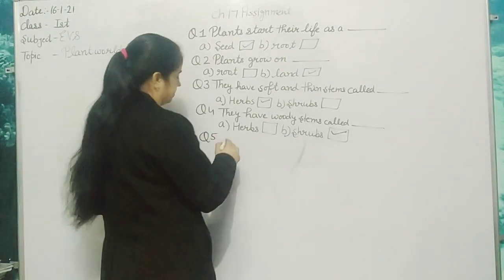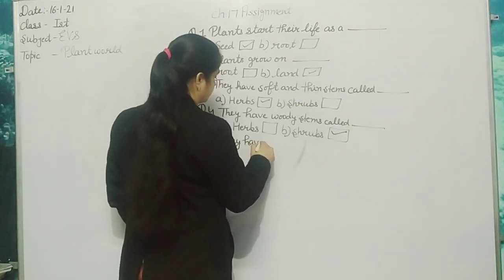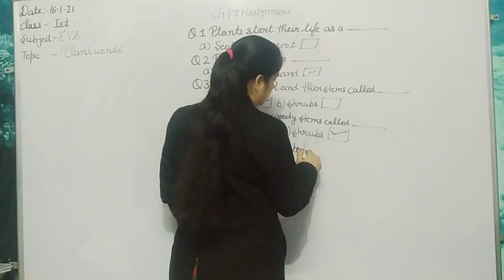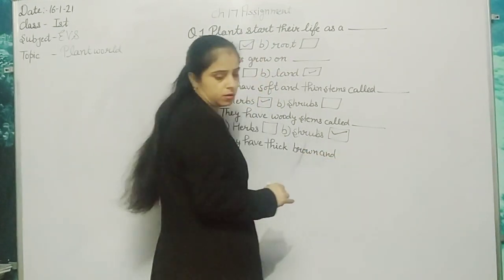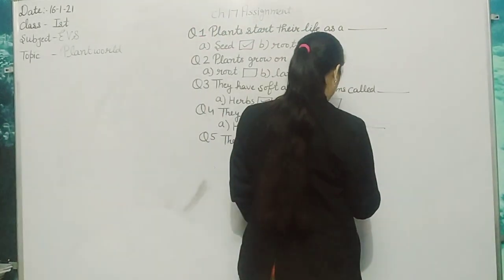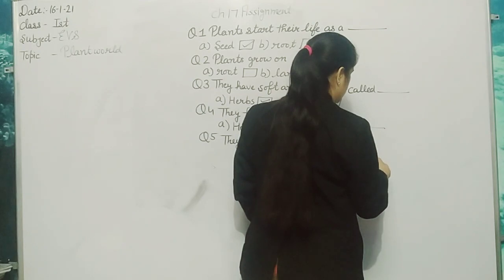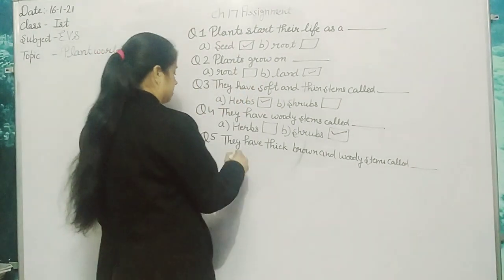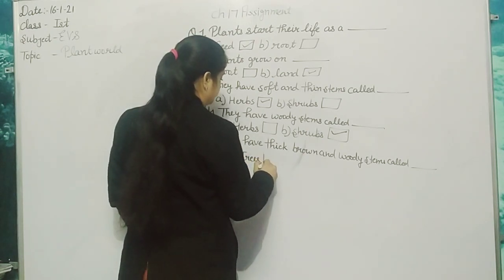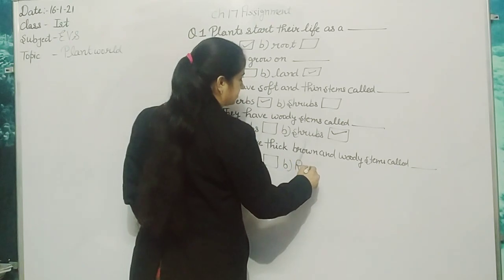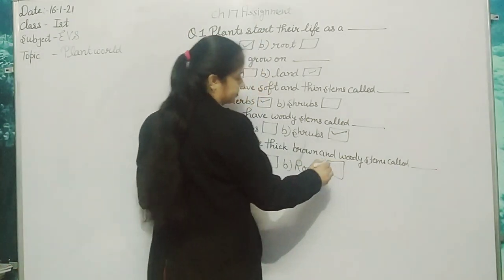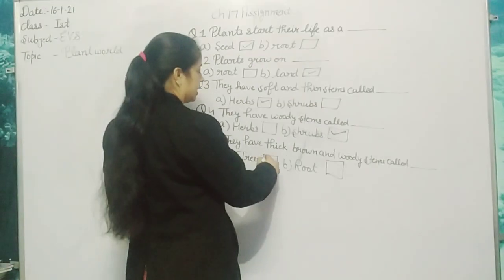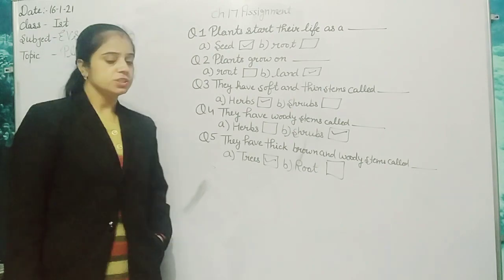They have thick brown and woody stems, called dash — Option A: trees, Option B: roots. What is our answer? Trees. Mark it on trees. Question 5, write it down.